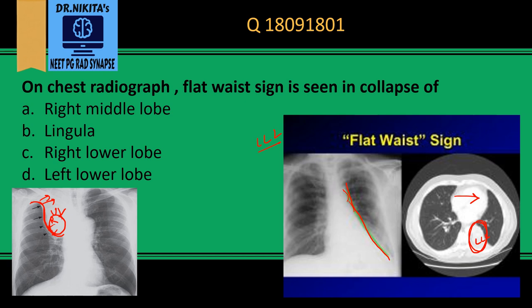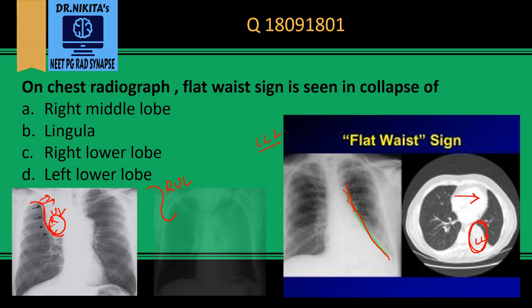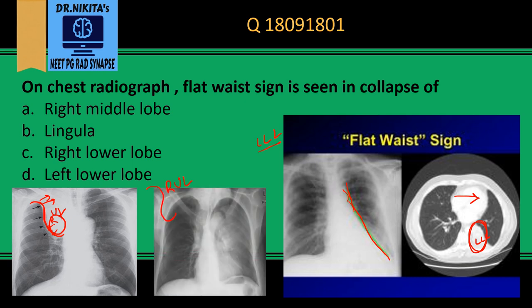This gives the reverse Golden S sign in right upper lobe collapse. The next sign is the Luft Sichel sign — 'luft' means air and 'sichel' means sickle-shaped. As seen here, there is sickle-shaped air surrounding the aortic arch, seen in left upper lobe collapse.